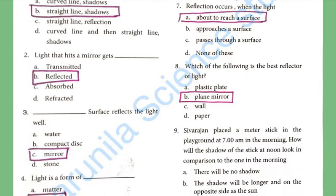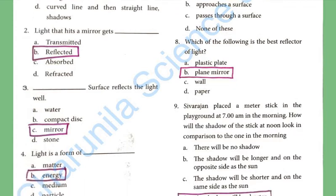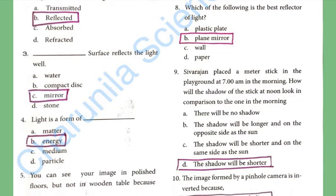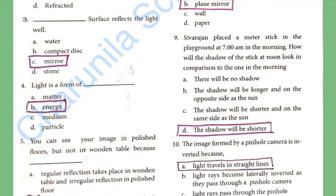Third question: a mirror surface reflects the light well. Fourth question: Light is a form of energy — answer is energy.